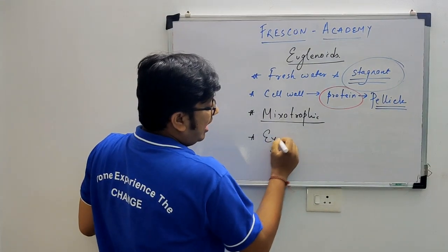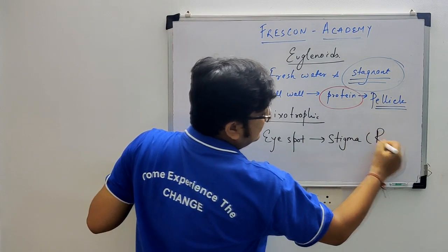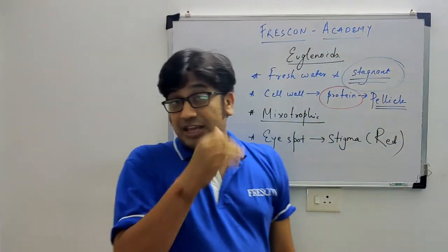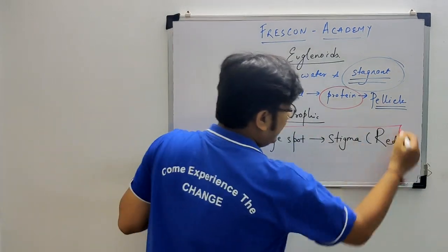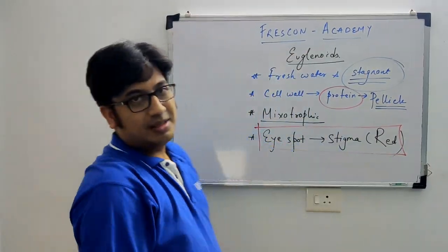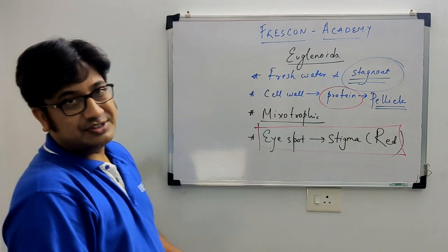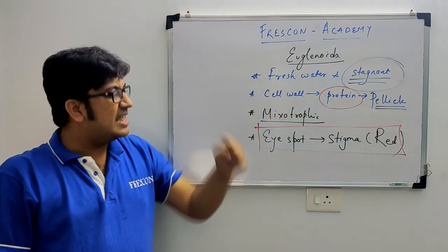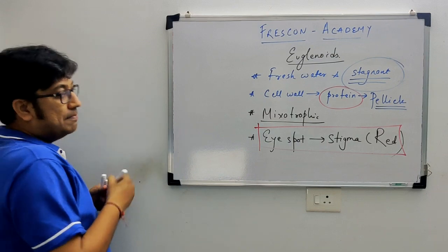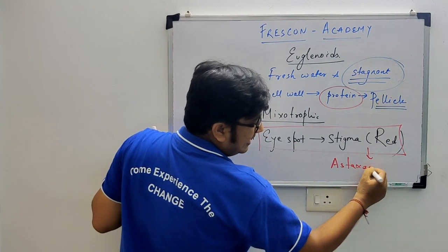Euglenoids have a bright red eye spot called stigma. This is a very important and favorite exam question. The eye spot is red because of a pigment called astaxanthin. Remember: Euglena has a bright red eye spot called stigma, and the red color is due to the pigment astaxanthin.